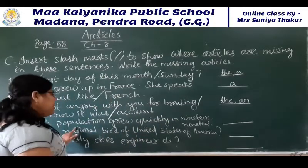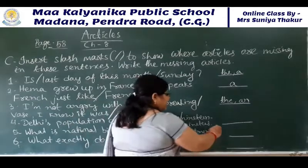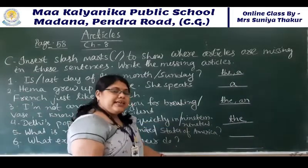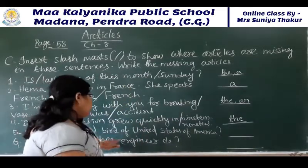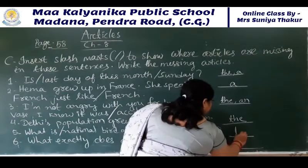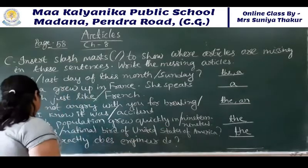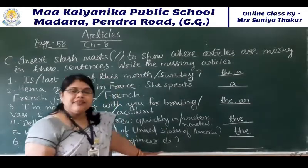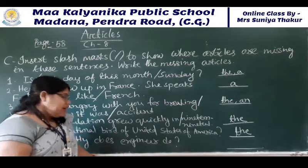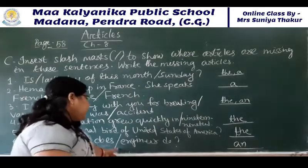Now number four: 'The English population grew quickly in the 1990s.' We have to put a slash and write 'the' before '1990s'. Next: 'What is the national word of United States of America?' And: 'What exactly does an engineer do?' Here 'engineer' starts with a vowel, and the vowel sound is coming, so we put a slash and write 'an'. We read: 'What exactly does an engineer do?'